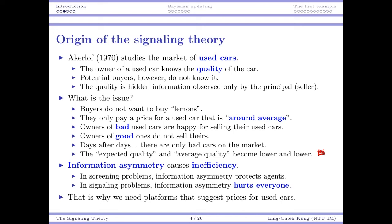Professor Akerlof from UC Berkeley once studied the market of used cars. For used cars, it's typically the case that the owner — the seller — knows the quality of that car, and potential buyers do not. You see a used car posted on a website, you see its basic attributes, but you don't really know how the previous owner treated the car and how it was maintained. So quality is a piece of hidden information that can be observed only by the principal. In this case, the principal is the seller because the principal is going to offer a price for that used car.